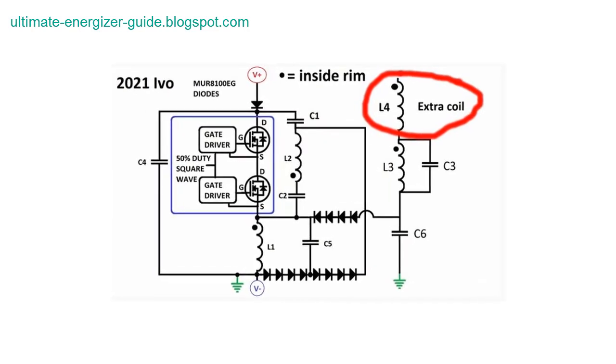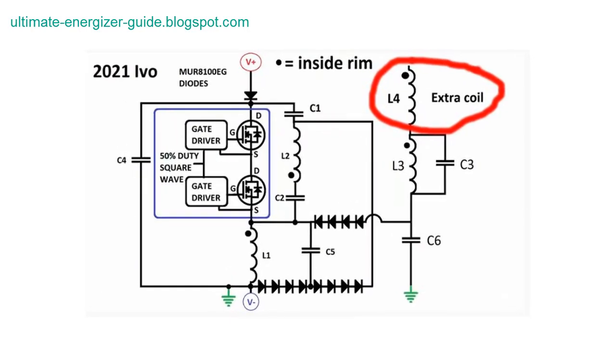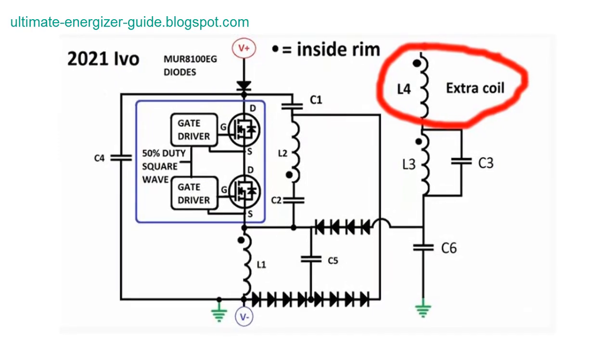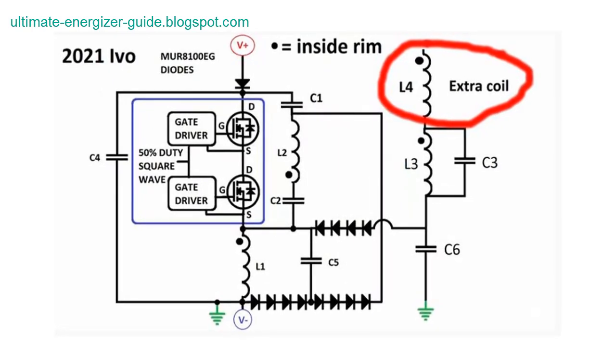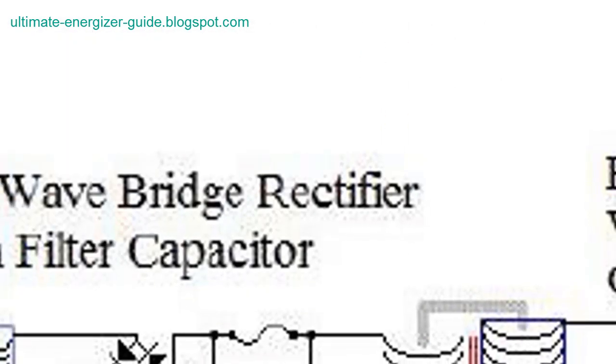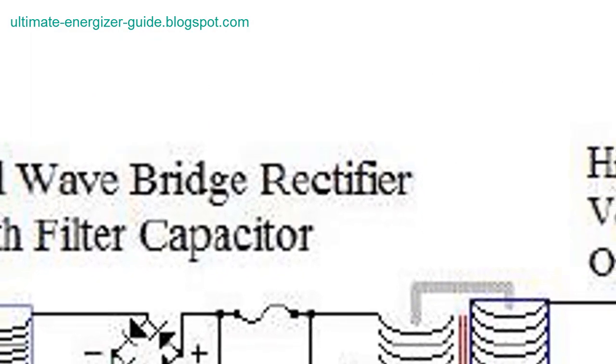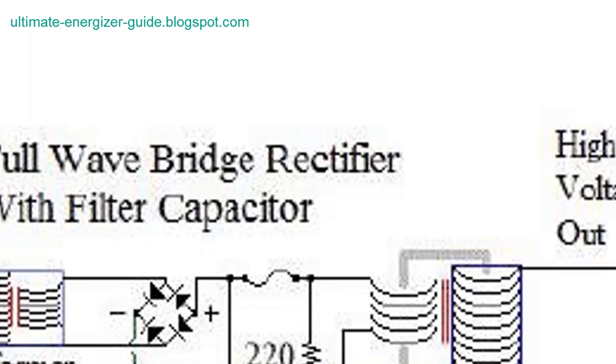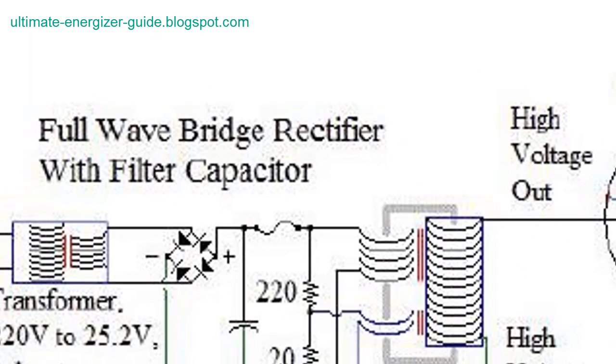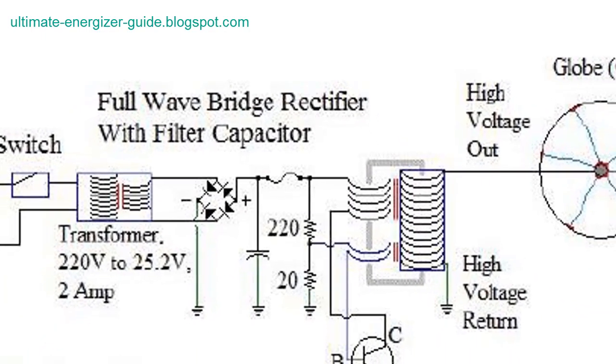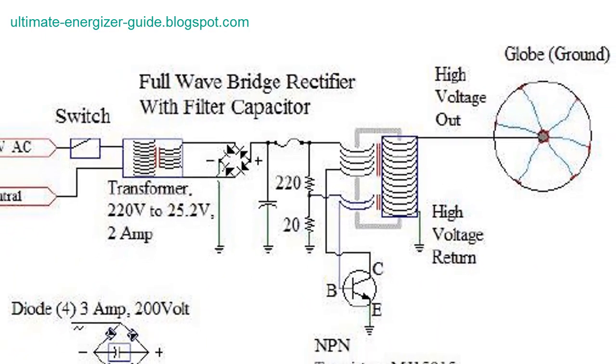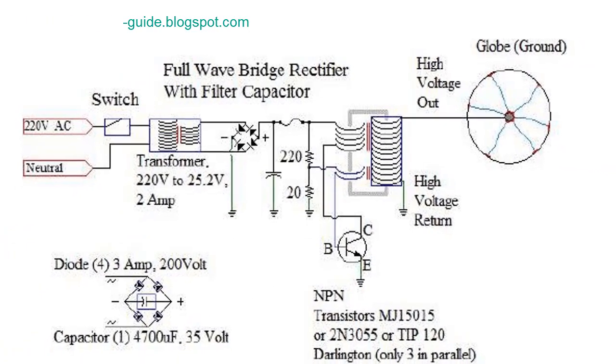The current in the secondary coil creates a high voltage, low current spark discharge. In recent years, some researchers have been experimenting with combining the Tesla coil with the bifiler coil to create a device that produces free energy. The bifiler coil is a type of transformer that has two coils wound around each other. When current flows through the primary winding, it creates an oscillating magnetic field.